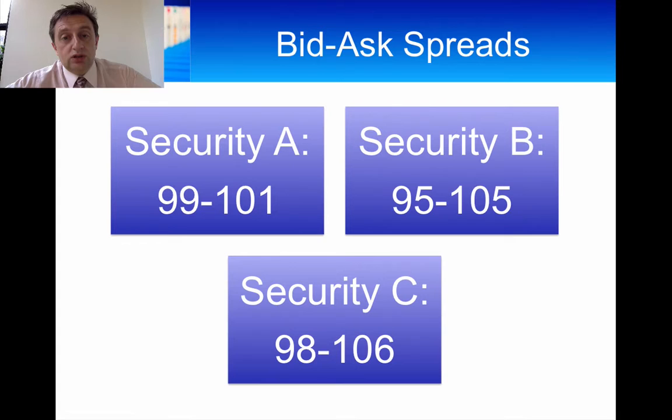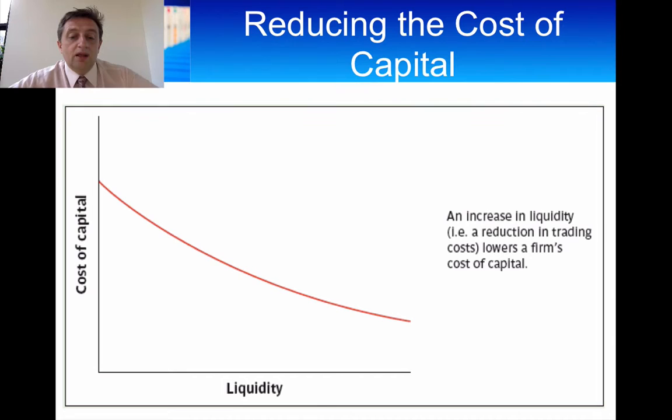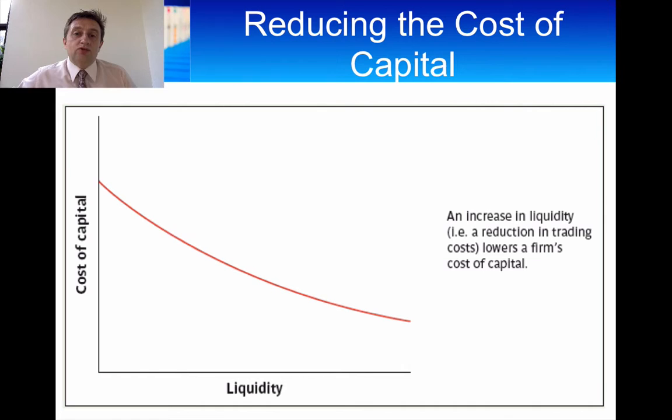The higher the transaction costs, the lower the liquidity. And the lower the liquidity, the more it costs for the manager — because an investor must get a higher return from the investment when it's less liquid. The higher return that the investor requires results in a higher cost. So: lower liquidity equals higher cost of capital, and higher liquidity equals lower cost of capital. That's quite an important relationship. As a manager, you should be trying to ensure that your equity is more liquid.